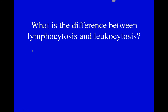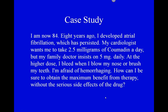What's the difference between lymphocytosis and leukocytosis? Which one means an increased white blood cell count? Lymphocytosis means an increased white blood cell count overall. Leukocytosis would be an increase in a specific type of white blood cell. Leukocytes, monocytes, basophils, and neutrophils are all types of white blood cells.